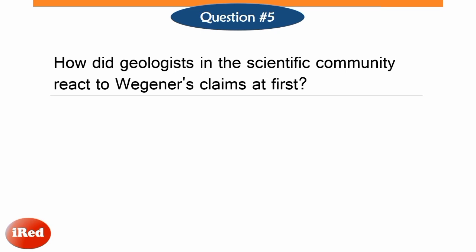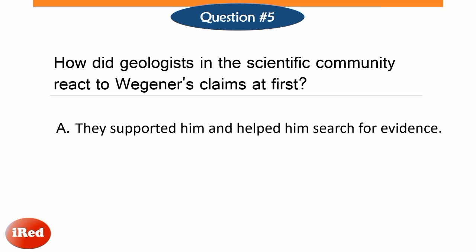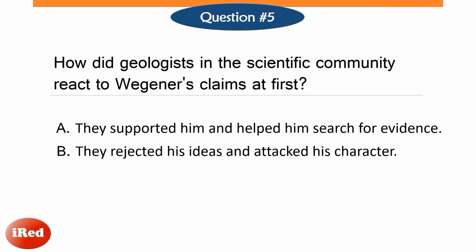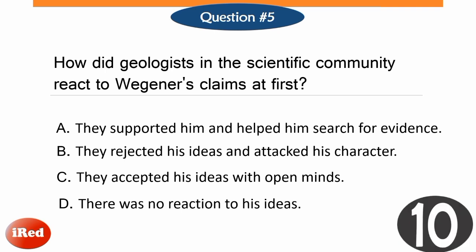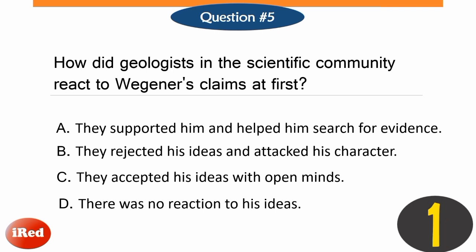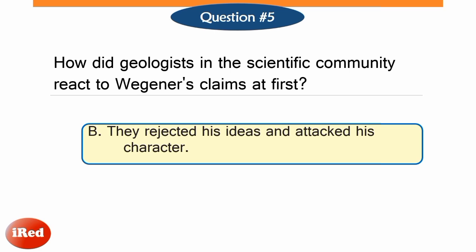How did geologists and the scientific community react to Wegener's claims at first? Letter A: They supported him and helped him search for evidence. Letter B: They rejected his ideas and attacked his character. Letter C: They accepted his ideas with open minds. Or letter D: There was no reaction to his ideas. The correct answer is letter B — they rejected his ideas and even attacked his character. Most geologists dismissed his theory as a fairy tale.